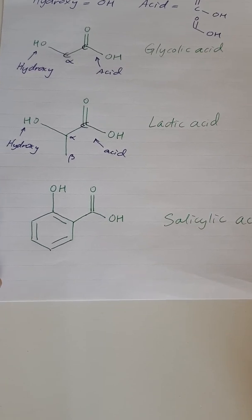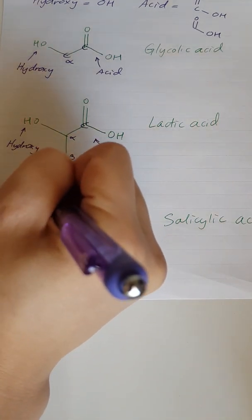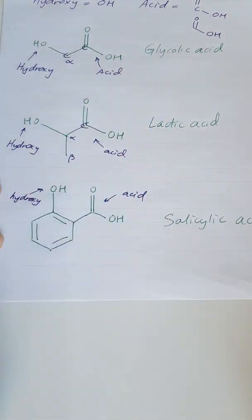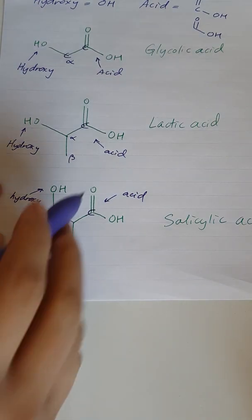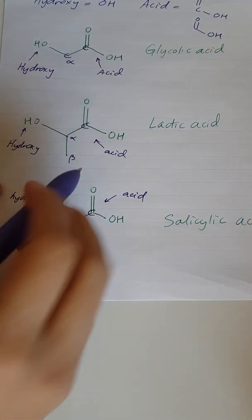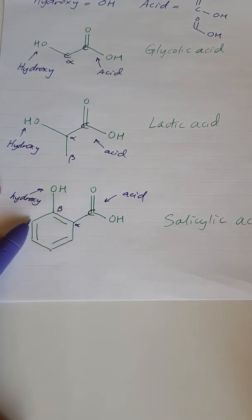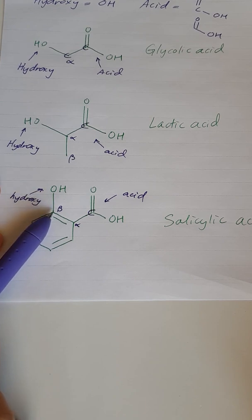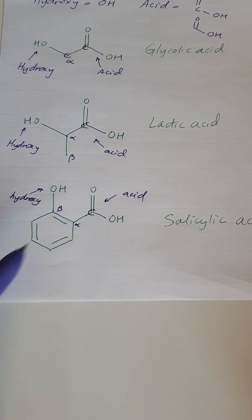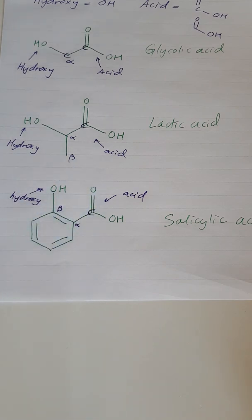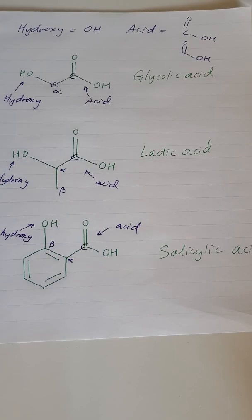Now salicylic acid is known as a beta hydroxy acid, and we can also see why if we count the carbons. Here we have our hydroxy group and over here we have the acid. The acid carbon is here, this next corner would be the alpha carbon, and this one is the beta carbon. You could also count it the other way — alpha, beta, gamma, delta, epsilon — but we don't count it that way because we just go with the closest one. That's because the closer these two groups are, the more they interact with each other and they have special properties, which is why alpha hydroxy acids all act similarly on your skin.